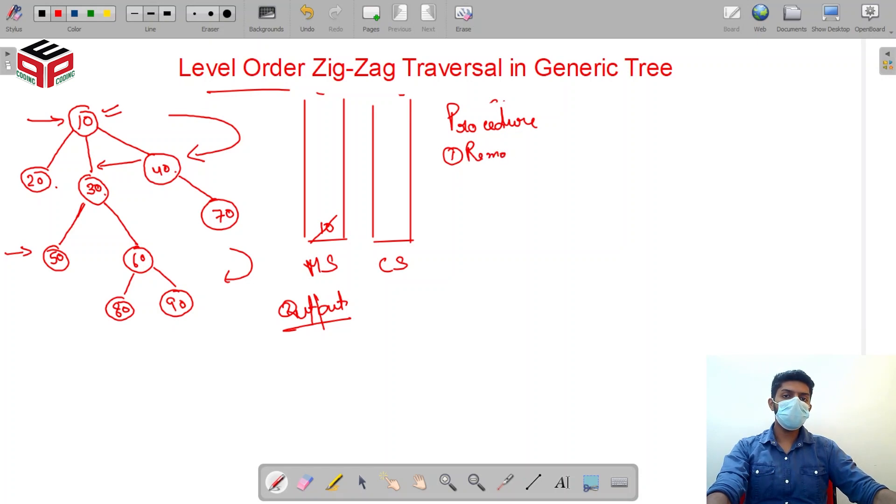After removing, I actually need to print the removed node, the data of the removed node. So the second step becomes printing. Third is adding the children in the same fashion as I have traversed. So if I have traversed from left to right, I'll be adding children to the child stack in the same fashion.